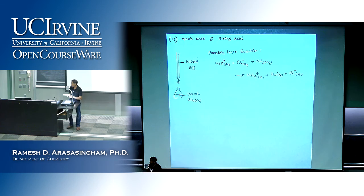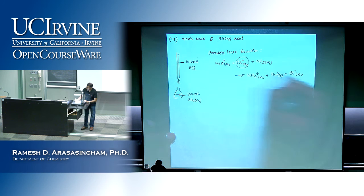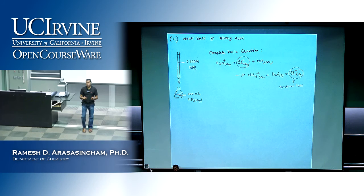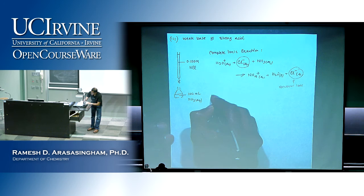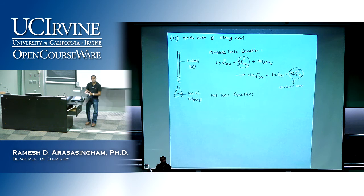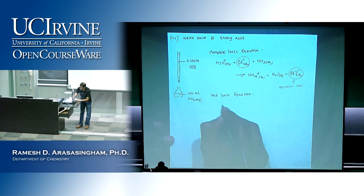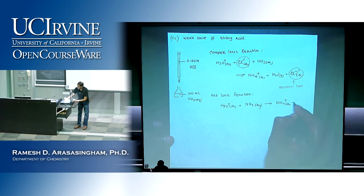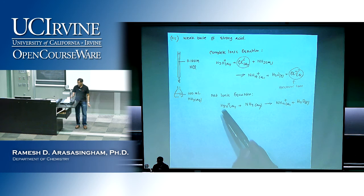Because chloride ions are there at the beginning and at the end, chloride ions are the spectator ions. If you write the net ionic equation and take away the spectator ions, what you end up with is hydronium ion plus ammonia reacting to give water and NH₄⁺, which is the conjugate acid. The acid donates a proton to the base, giving NH₄⁺ and water — this is the neutralization.